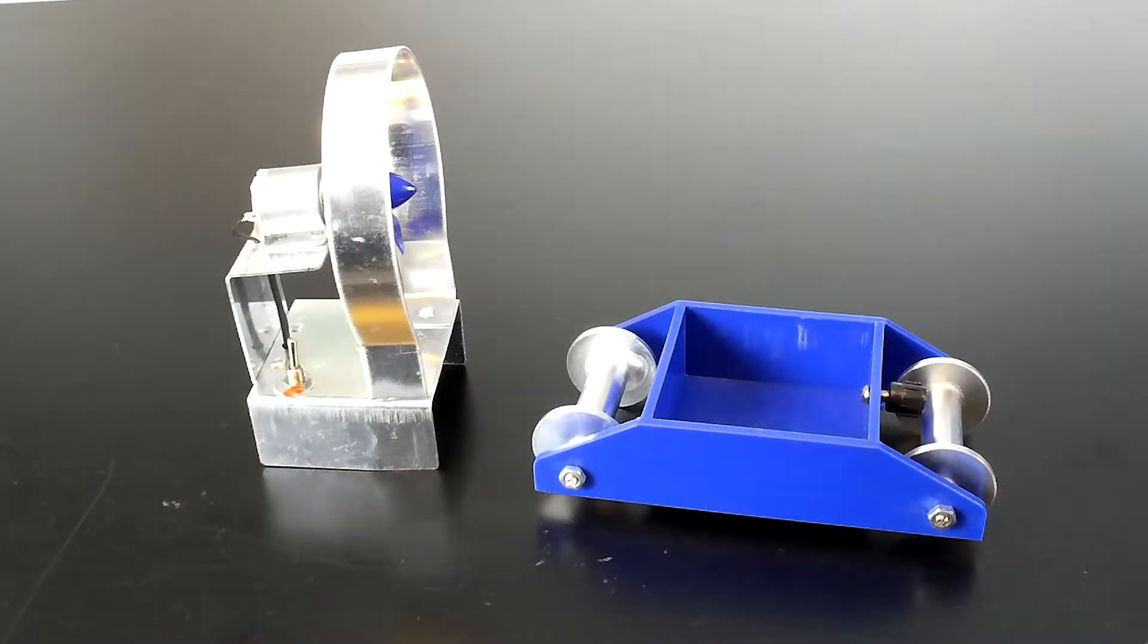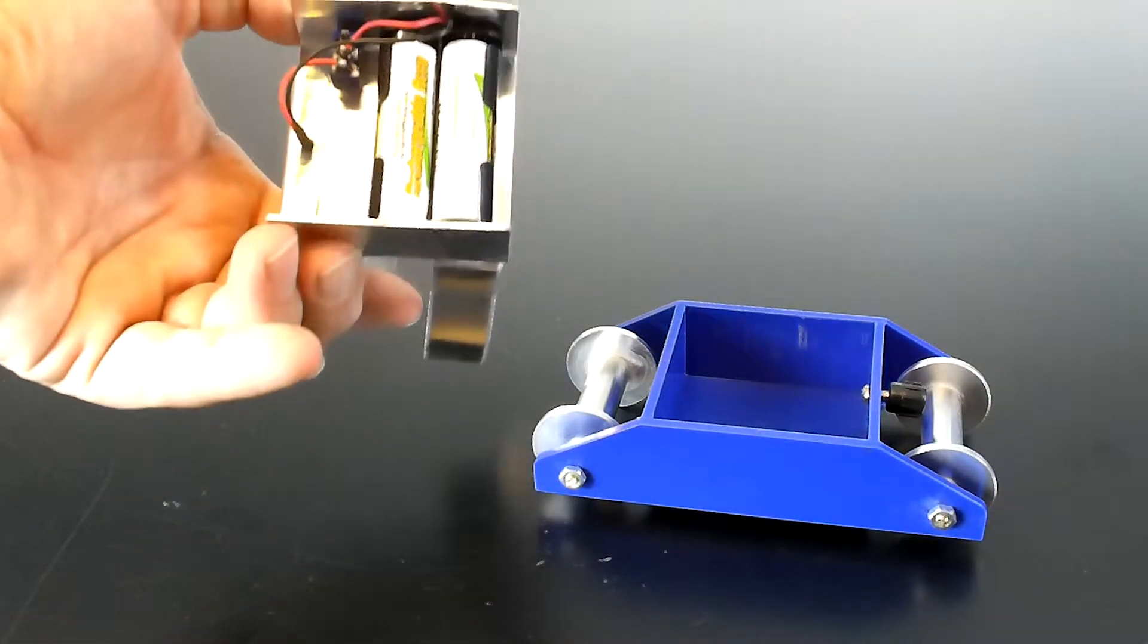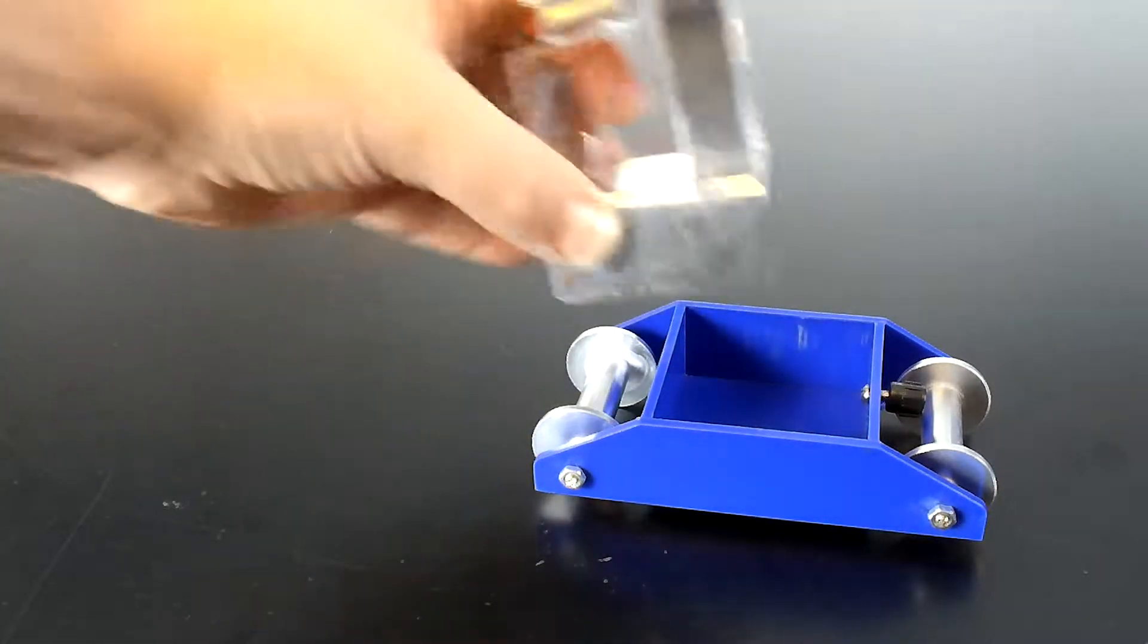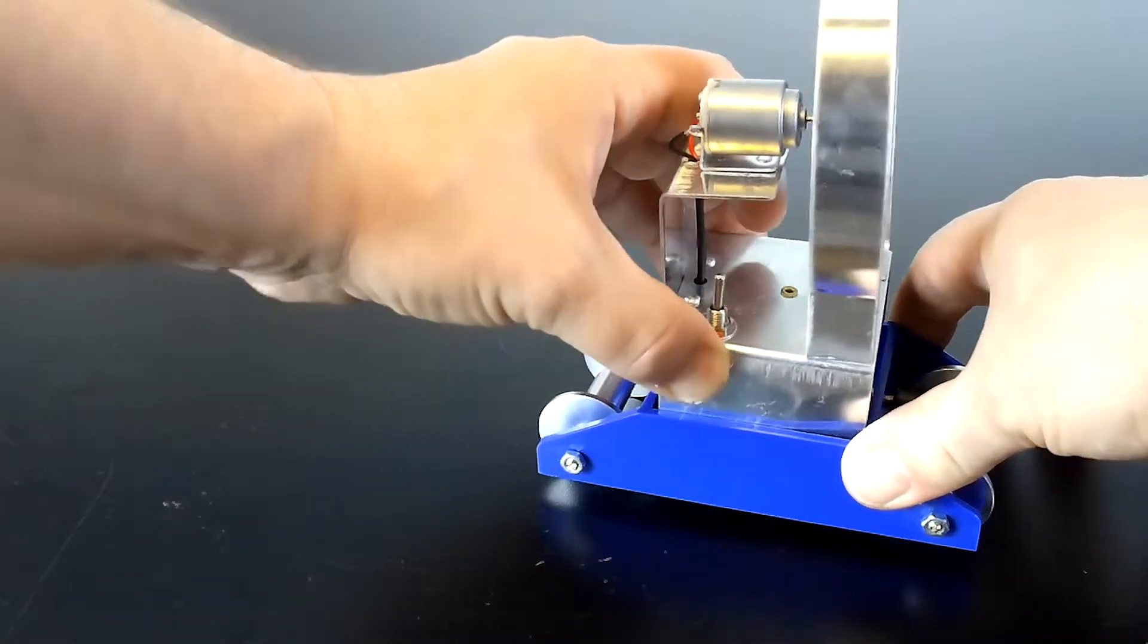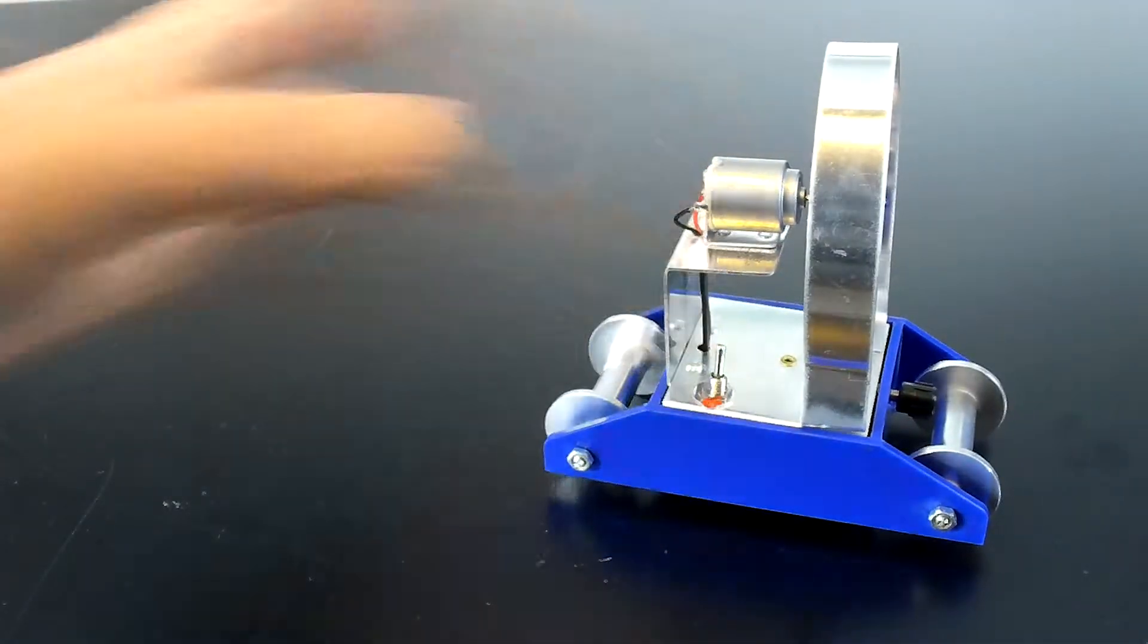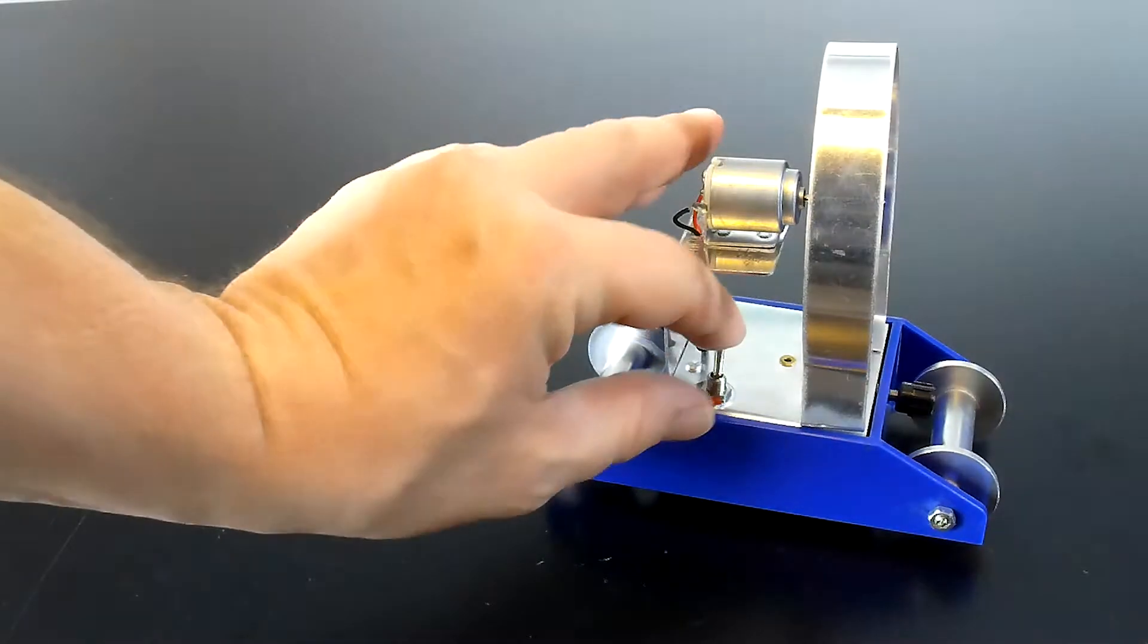When you're ready to conduct the experiment, simply put two fresh batteries into the fan motor and then insert this into the cavity of the Halls carriage. Then you just turn it on.